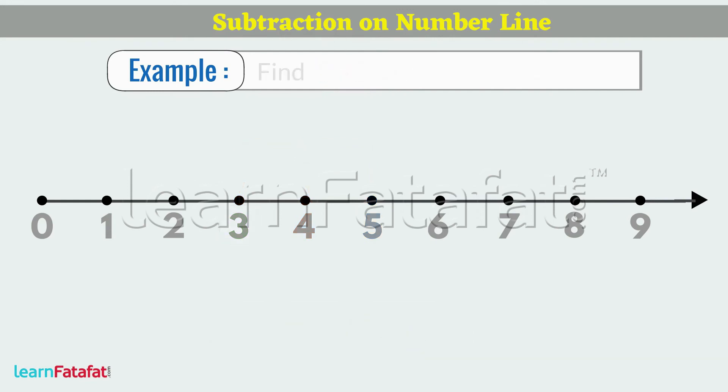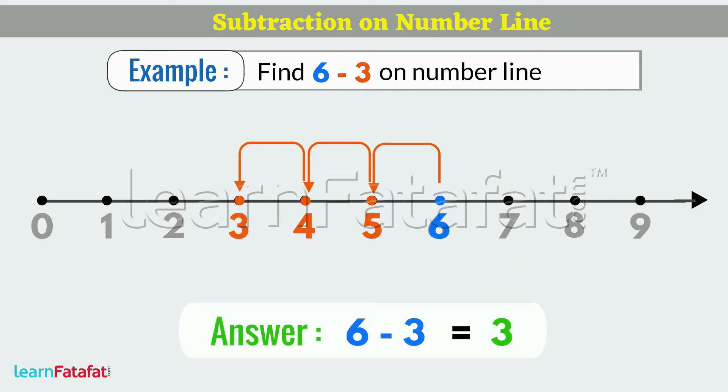Next Example: find 6 minus 3 on Number Line. Locate 6 and make 3 jumps to the left of 6. Answer is 3.